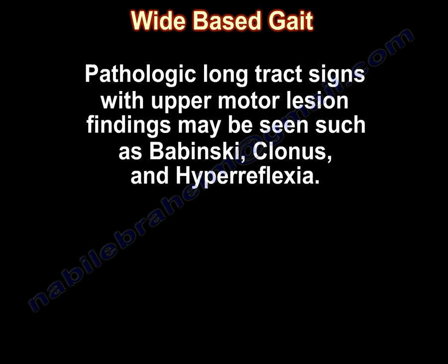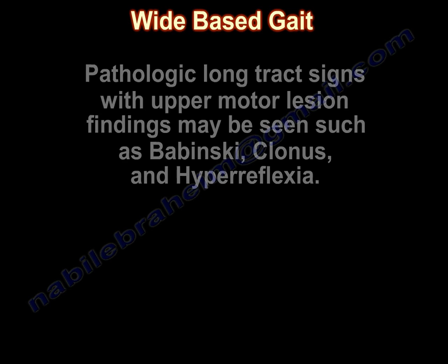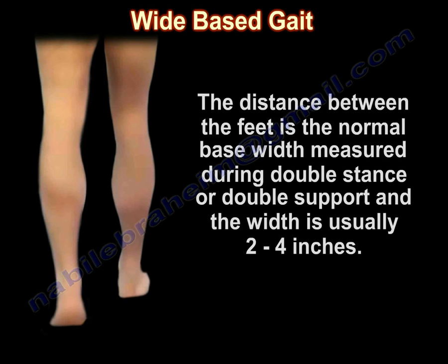Pathologic long-track signs with upper motor neuron lesion findings may be seen, such as Babinski, Clonus, and Hyperreflexia. The distance between the feet is the normal base width measured during double stance or double support, and the width is usually 2 to 4 inches.